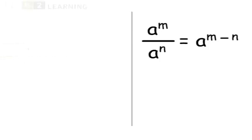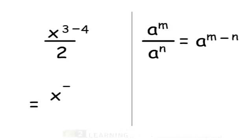An expression such as x raised to 3 divided by 2x raised to 4 can be simplified as x raised to 3 minus 4 divided by 2. This can be further simplified as x raised to minus 1 divided by 2.